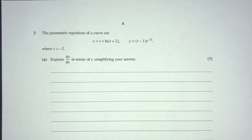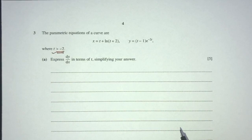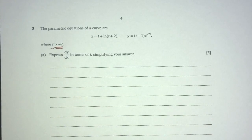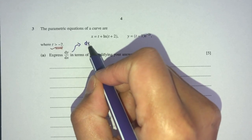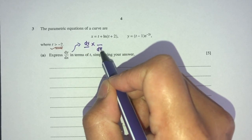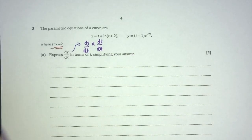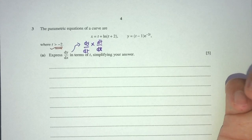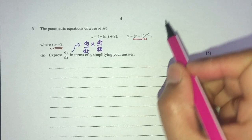Let's move on to question number 3. We have two parametric equations for a curve where t must be greater than −2. Express dy/dx in terms of t, simplifying your answer. We find dy/dx using the chain rule: dy/dx = (dy/dt) × (dt/dx). We need to find dy/dt and dx/dt. Since y involves a product, we use the product rule to find dy/dt.